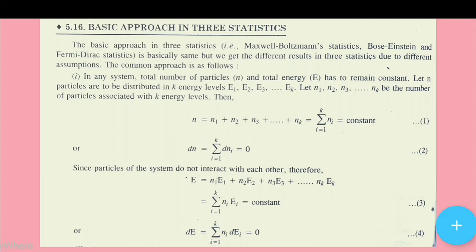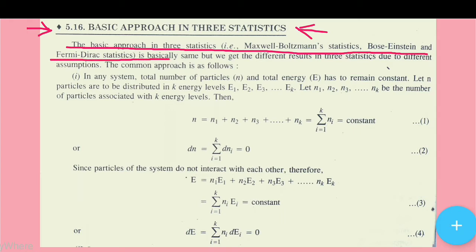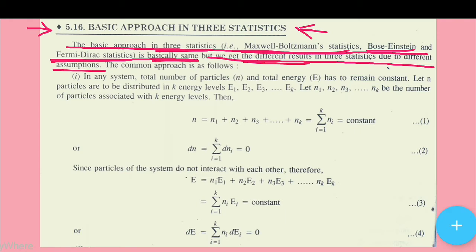Hello everyone, welcome to Learning Science. Today we will learn the basic approach in three statistics: Maxwell-Boltzmann statistics, Bose-Einstein statistics, and Fermi-Dirac statistics. The basic approach is the same in all three, but we get different results due to different assumptions — we have assumed things differently.